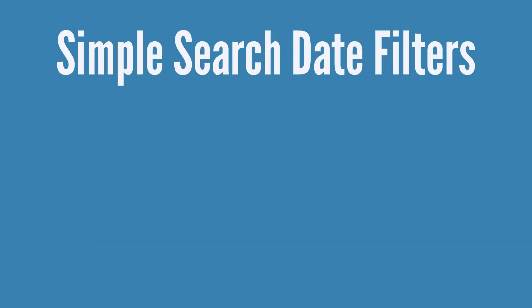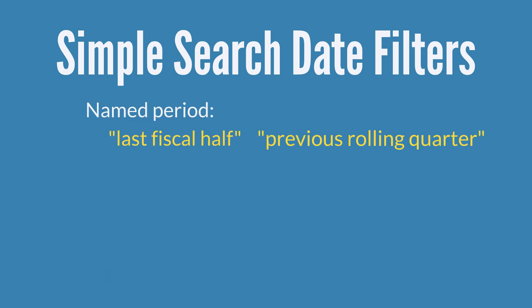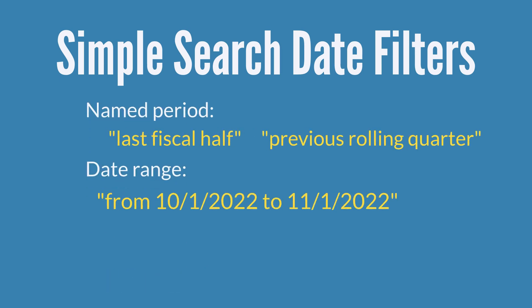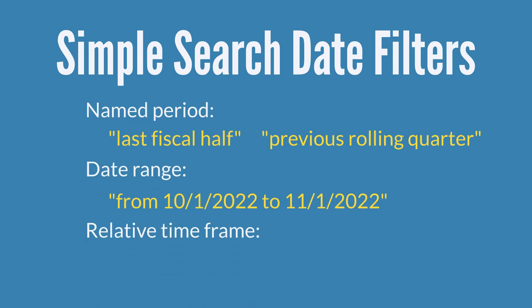Some simple searches also have several date options that you can filter by. The three types of date options include a named period of time, a specific date range, and a relative time frame.